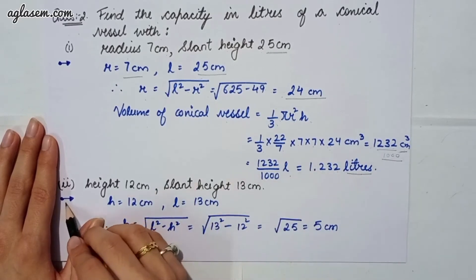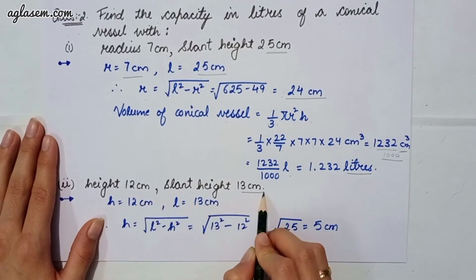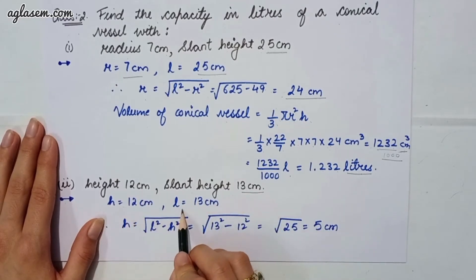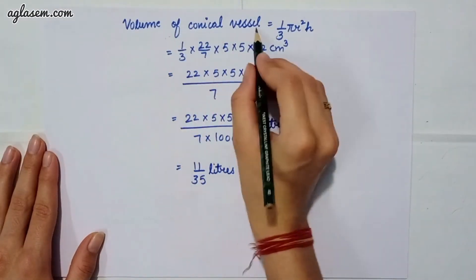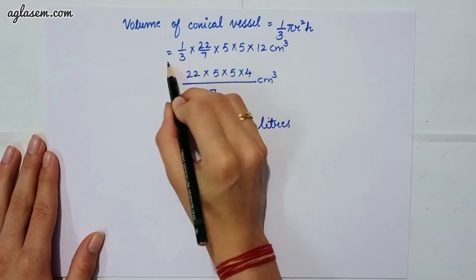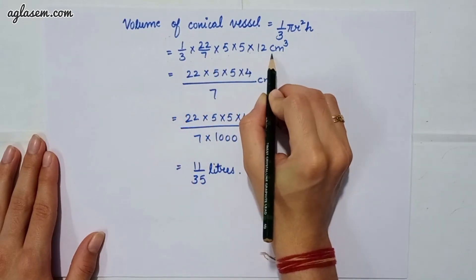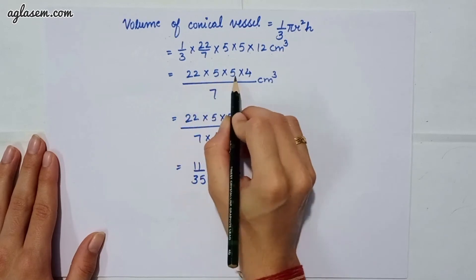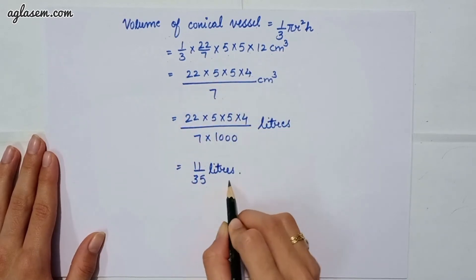Moving to the second part, which says height is 12 cm and slant height is 13 cm. Height and slant height are given. Applying the same formula: r = √(l² − h²), which gives 5 cm. Volume of conical vessel = 1/3 × 22/7 × 5 × 5 × 12 = 22 × 5 × 5 × 4 / 7, that is 11/35 liters.